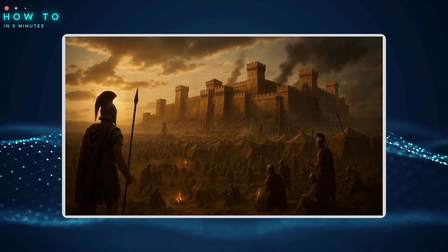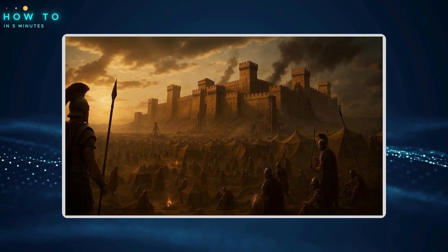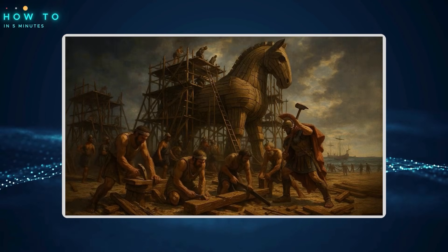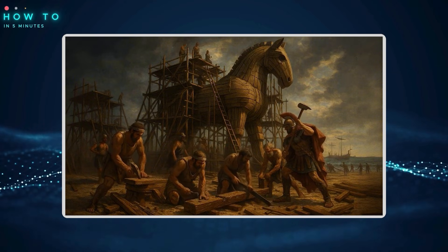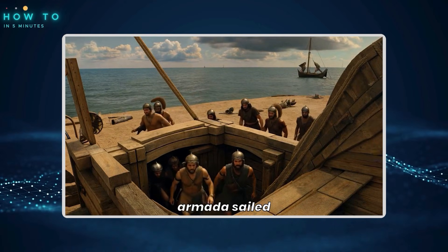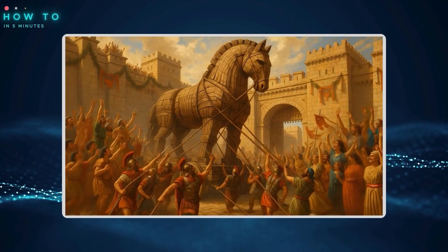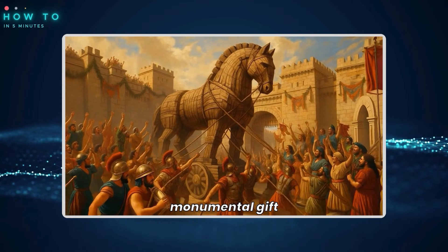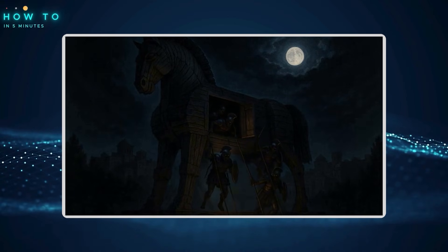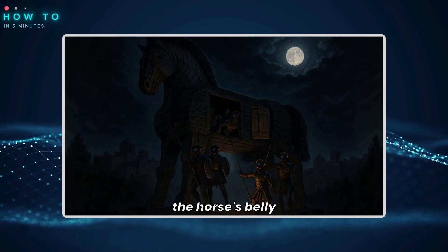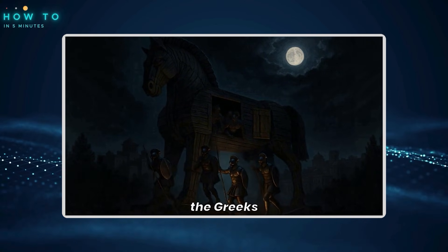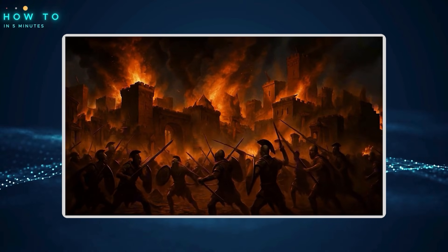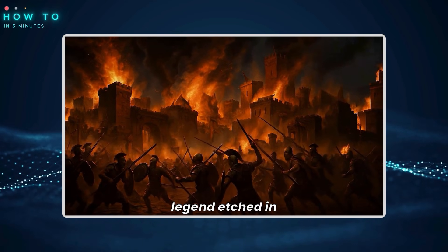For ten long years, mighty Troy withstood the Greek siege. But cunning Odysseus devised a plan. A colossal wooden horse rose — hollow, waiting. Inside, elite Greek warriors held their breath as the armada sailed away, feigning retreat. Believing it a divine offering, the unsuspecting Trojans celebrated, dragging the monumental gift into their impregnable city. That night, as Troy slept, the horse's belly opened. Silently, the Greeks emerged, seizing the gates. Chaos erupted. Fire consumed the city. Troy, once unconquered, fell. Its legend etched in time forever.